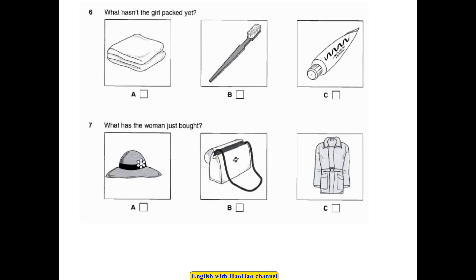Question 6: What hasn't the girl packed yet? 'Have you got everything you need for your holiday?' 'Well, I've packed my soap and toothbrush, if that's what you mean, but I can't find any toothpaste anywhere.' 'There's probably some in the bathroom cupboard, but what about a towel? Have you remembered to pack that?' 'Of course.'